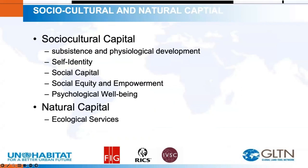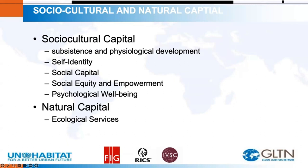For property, social values include subsistence and physiological development, and self-identity — people's social status and their personalization of property. There is also social capital, including relationships between ownership and social-cultural status. We also consider social equity and empowerment, looking at political, gender, and social relations, as well as psychological well-being, personal comfort, and convenience. Land may form part of a person's identity, and communal land rights may foster connections between people and their physical environment. An essential point is that social values cannot be adequately captured by monetary numbers.